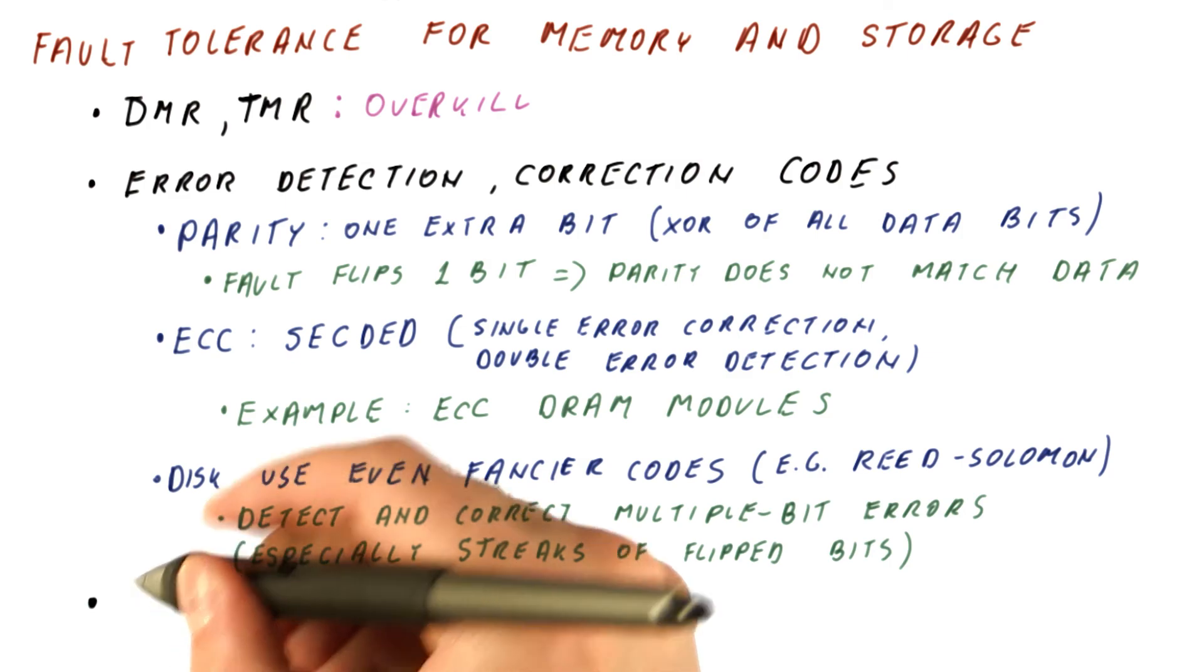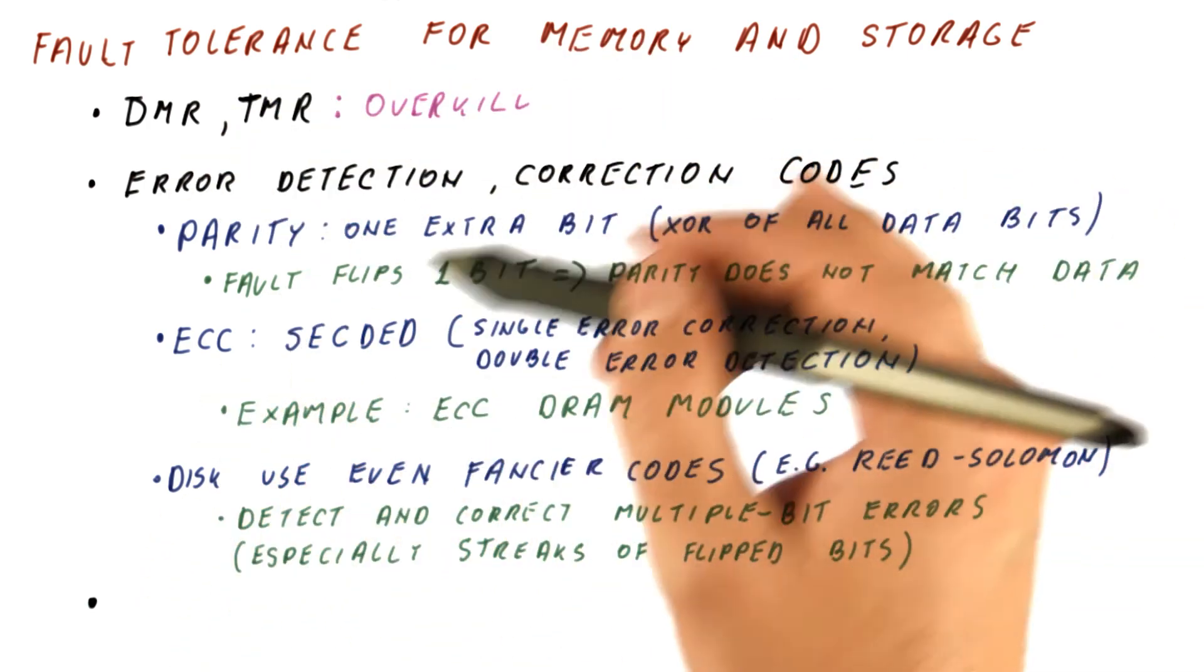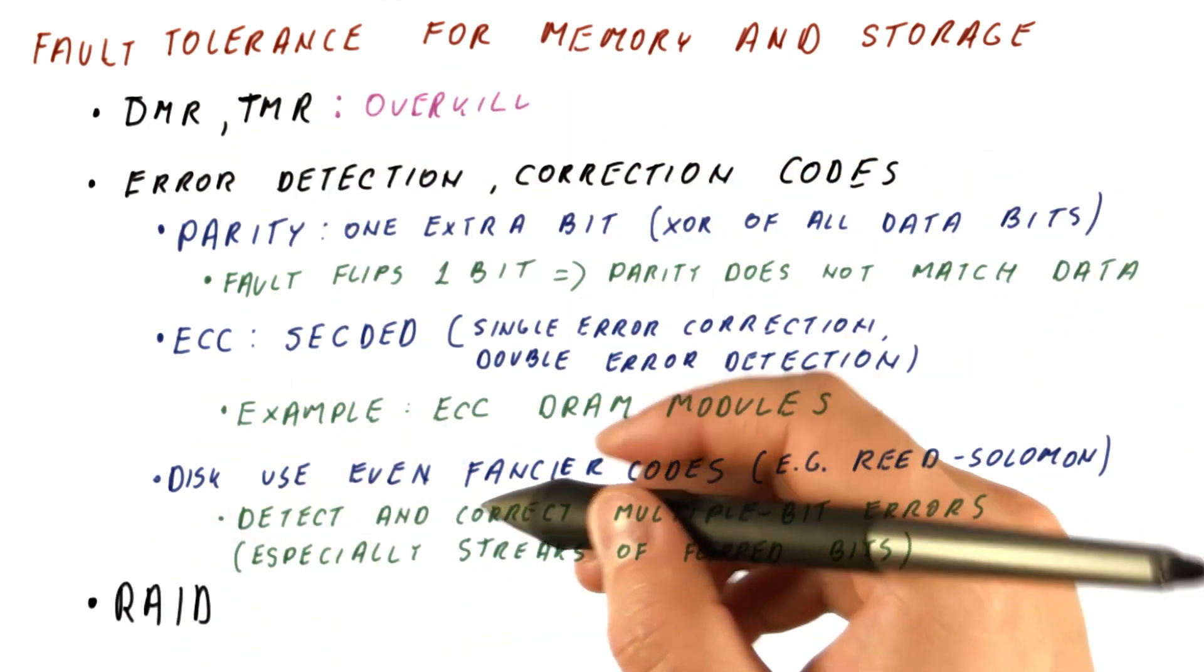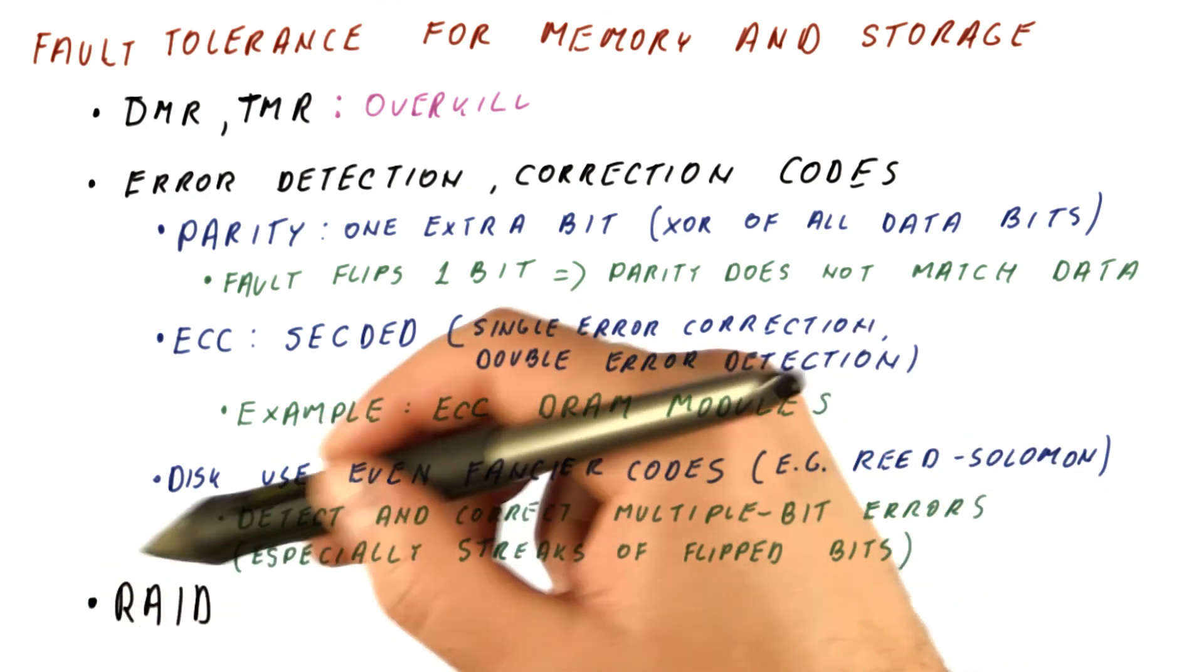For hard drives, in addition to these error detection and correction codes, there is a family of techniques called RAID that we will look at next.